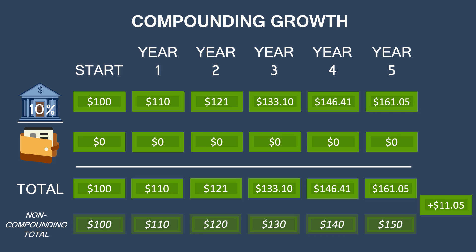Now, $11 over five years might not seem like a lot, and we're only starting with $100. Most people will save a lot more than that. But much more importantly, compounded interest and exponential growth really benefit from time. Five years might sound like a lot, but let's look at what happens over 10, 15, or even 30 years — the effect of exponential growth becomes massive. Rather than go through the visualization for another 25 years, let's simplify things by showing a graph, which is a typical way exponential growth is displayed.